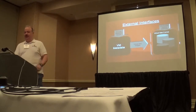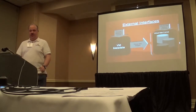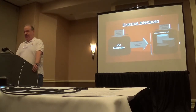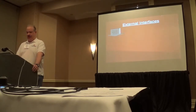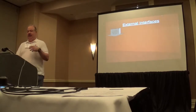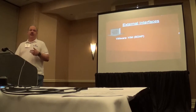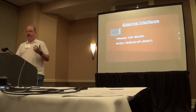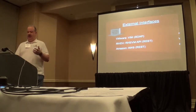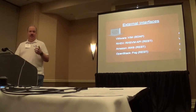From this, we get the external interfaces. To get the metadata, we use the provider's API: for VMware, we use VIM; we have a RHEVm interface; for Amazon AWS and OpenStack, we use Fog in Ruby to acquire that information.